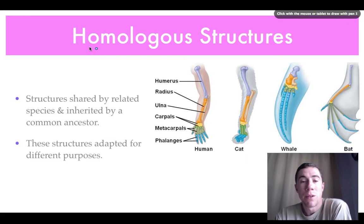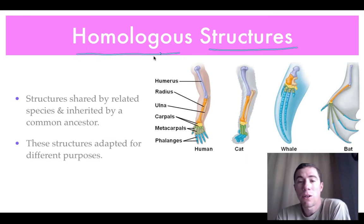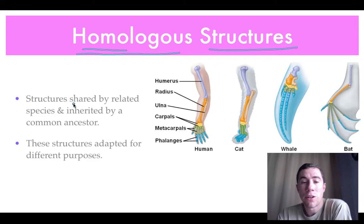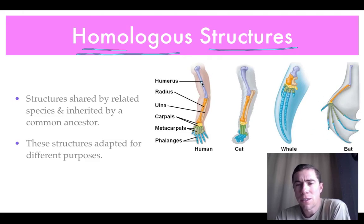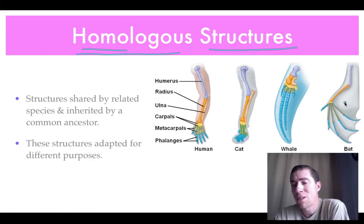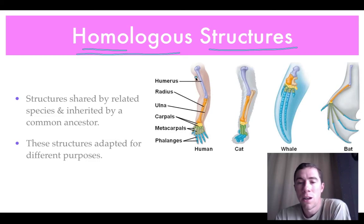There's a term called homologous structures. Homologous means similar or the same, and these are structures shared by related species and inherited from a common ancestor, but adapted for different purposes. This image shows a human's arm, a cat's leg, a whale's flipper, and a bat's wing. Even though they look different externally, if we look at the internal structure we see they share quite a few similarities. For example, in purple we have the humerus — the upper arm bone — present in all four.